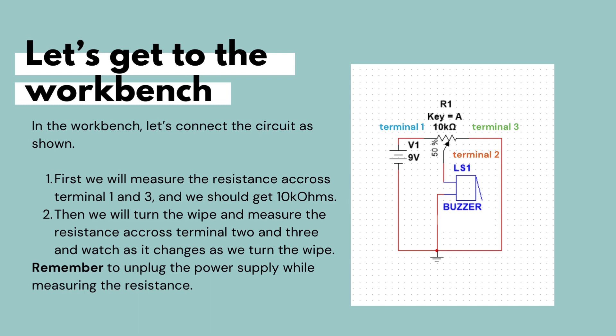So let's get to the workbench and see the potentiometer in action. First, we will connect the circuit as shown: a 9-volt power supply connected to a potentiometer that is connected to a buzzer. If the voltage on the output terminal of the potentiometer, which is the second terminal, is high enough, the buzzer will make a sound. If not, it won't. But first, we will measure the resistance across terminals 1 and 3 and verify that the potentiometer gives a resistance close to its rated value. Since I'm using a 10 kΩ potentiometer, I must get a value closer to 10 kΩ.